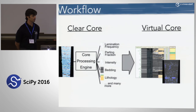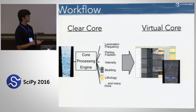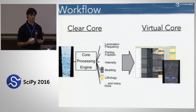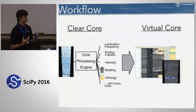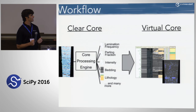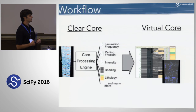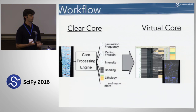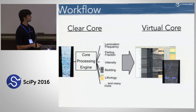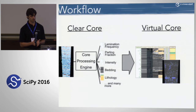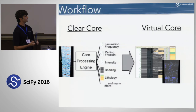The workflow I'm going to describe has two components. The first step we call ClearCore: that is the step of taking the raw CT data, processing it, turning it into a 3D model, cleansing and correcting it, removing artifacts, and then using feature detection algorithms to describe it — determining bedding patterns, lamination frequencies, and fractures. Then VirtualCore is the name we give to the end-user application: a visualization and analysis environment that takes the CT data and presents it in nice 2D views alongside well logs, high-resolution core photographs, and also has a 3D visualizer.